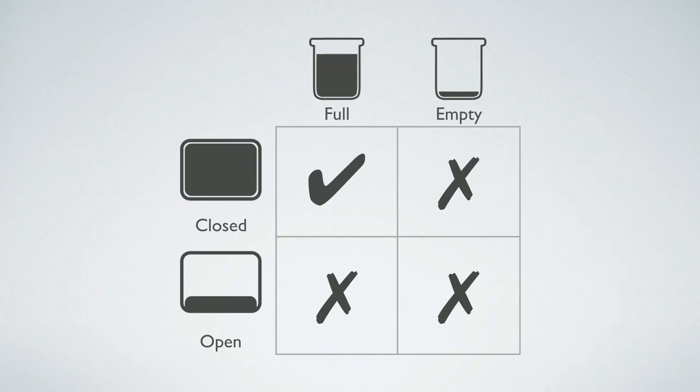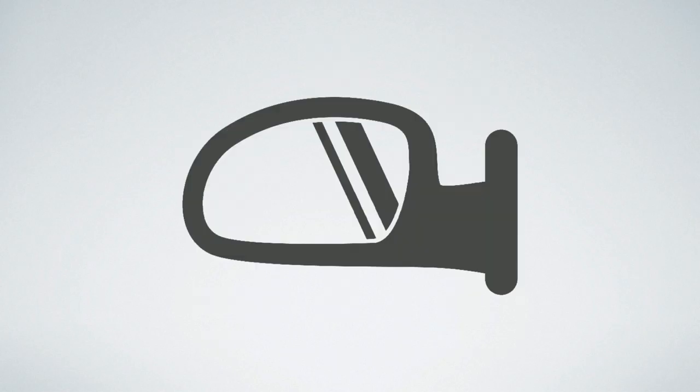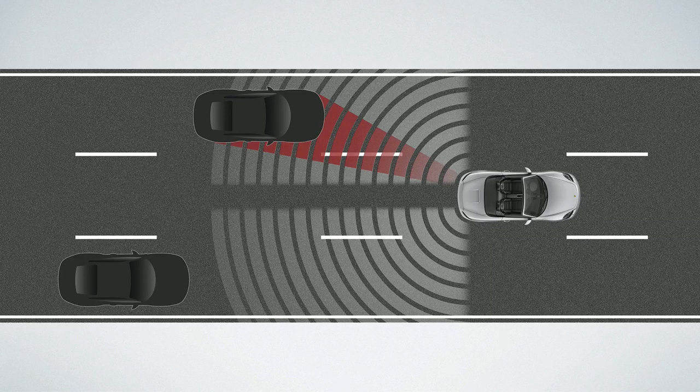We don't want to test only for success, but for failure too. With these conditions, there's only one combination that should allow us to clean the windshield, but we should account for the outliers as well — if the sunroof is closed but we don't have fluid, if we're empty and the sunroof is open, and so on. Now let's move beyond simple booleans. The next feature we're tasked to develop is a lane change assist.